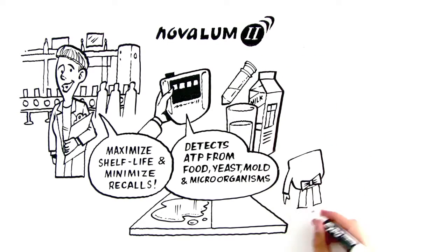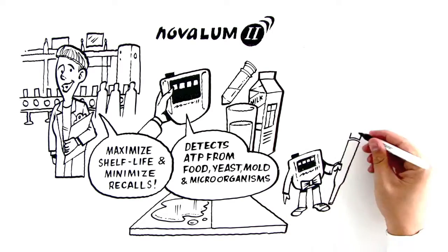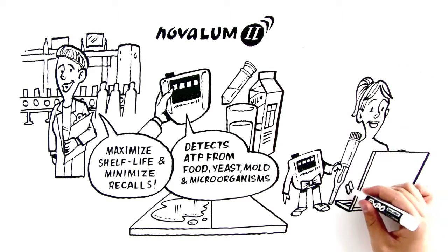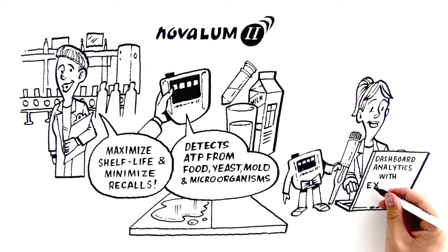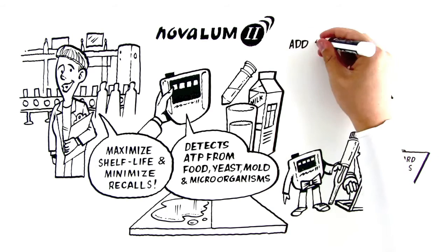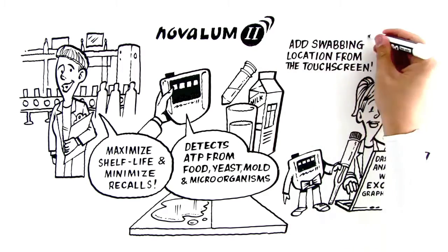The NOVALOOM 2 system acts as Sallie's personal assistant, helping her boost productivity and save money. Dashboard analytics with Excel graphing lets Sallie manage data and metrics quickly and easily. Sallie can add new swabbing locations right from the system's touchscreen.